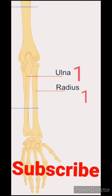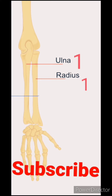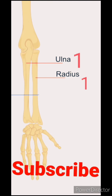we have two bones. Number one is the radius and the second one is the ulna. The radius is on our thumb side and the ulna is on our little finger side.